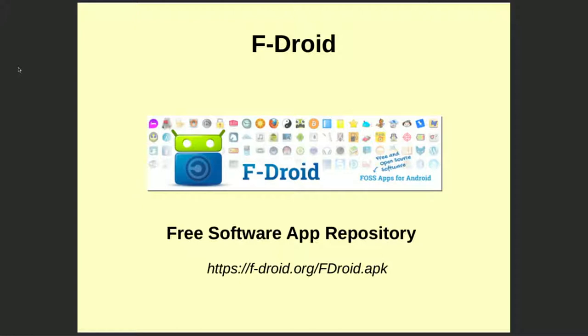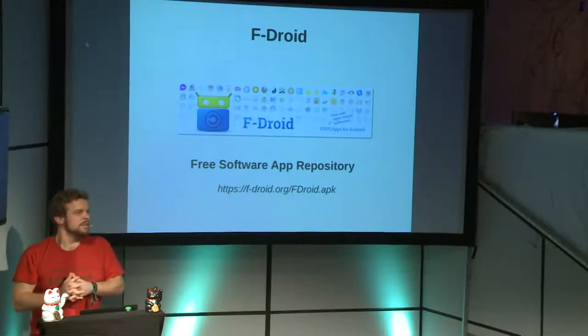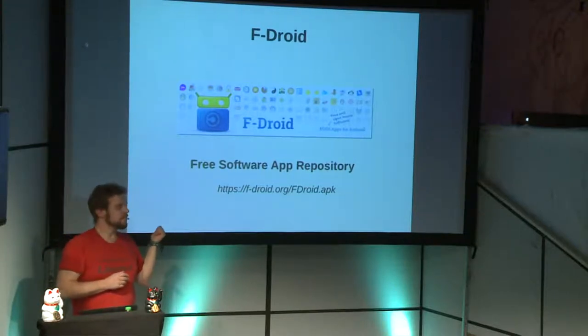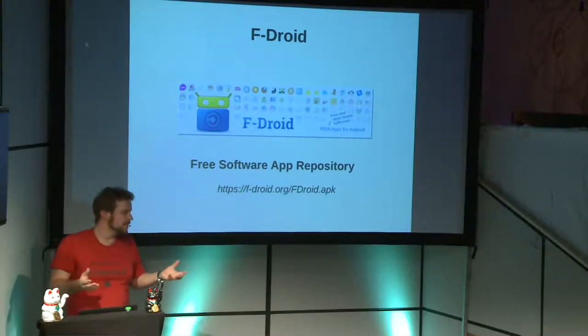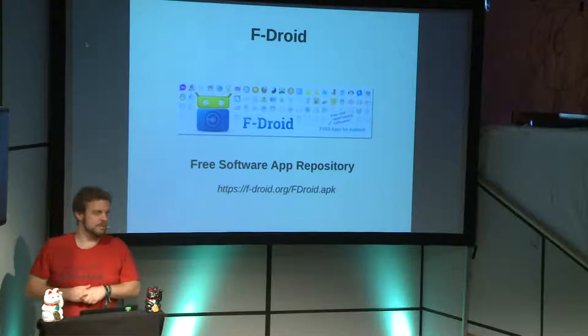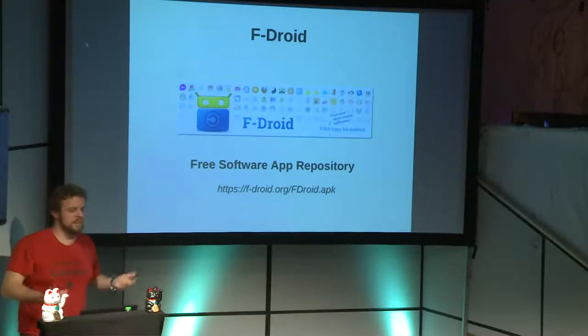F-Droid is a free software repository — similar to Google Play Store or Amazon Marketplace — but containing only free software apps. It also has a client to access that repository. To get the client, you have to download it from the internet, since it's not in competing stores for competition reasons. You type in the URL, download it once, and install it.